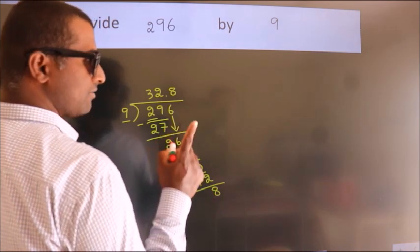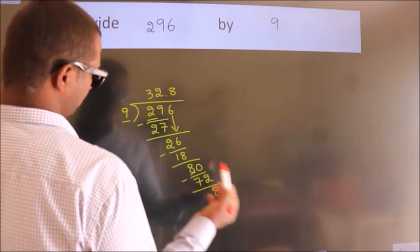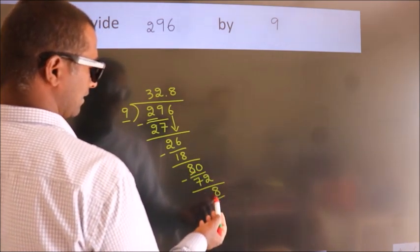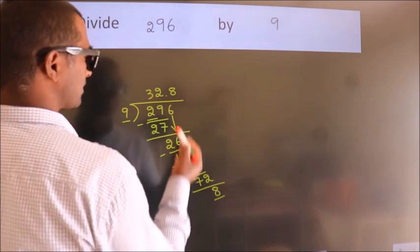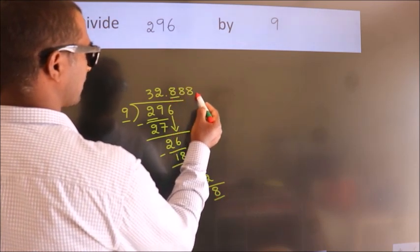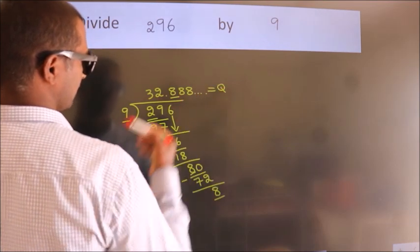Now you observe, here we had 8 and we got 8 again. That means this number keeps on repeating. So this is our quotient.